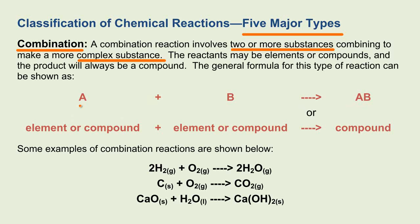This can be represented here by A combining with B to form the more complex substance AB. A can be an element or a compound, B can be an element or a compound, and it forms the combination AB.